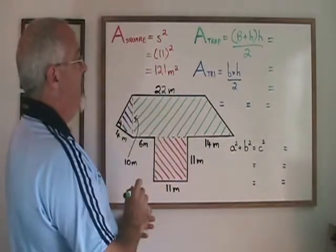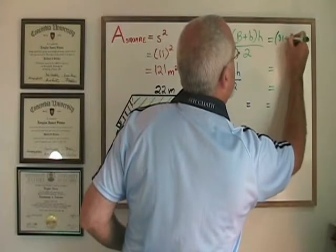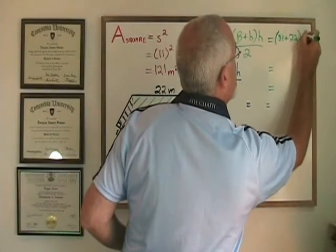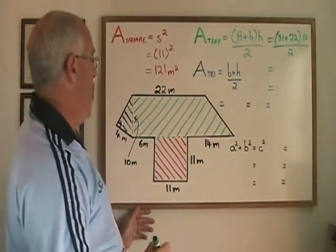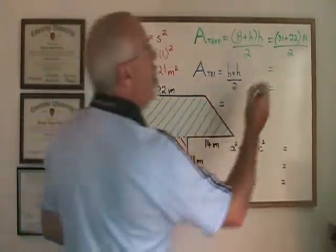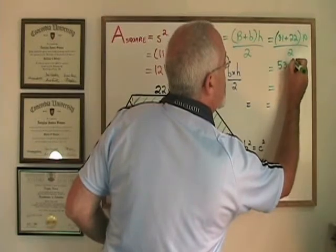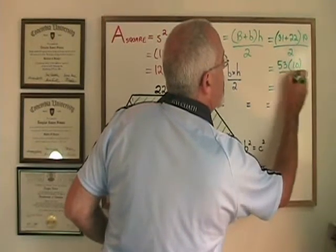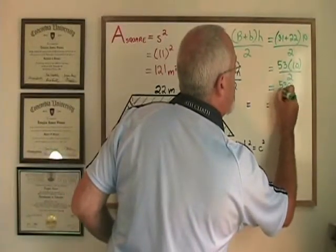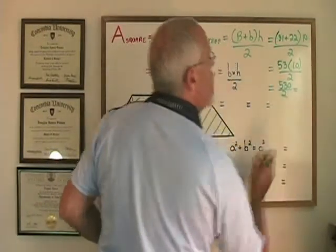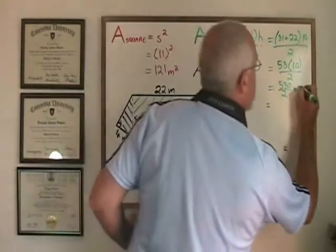Plugging these numbers into the formula, I have 31 plus 22 times 10 divided by 2. Simplifying, 31 plus 22 is 53 times 10 divided by 2. 53 times 10 is 530 divided by 2. So the area of the right trapezoid is half of 530, which is 265.